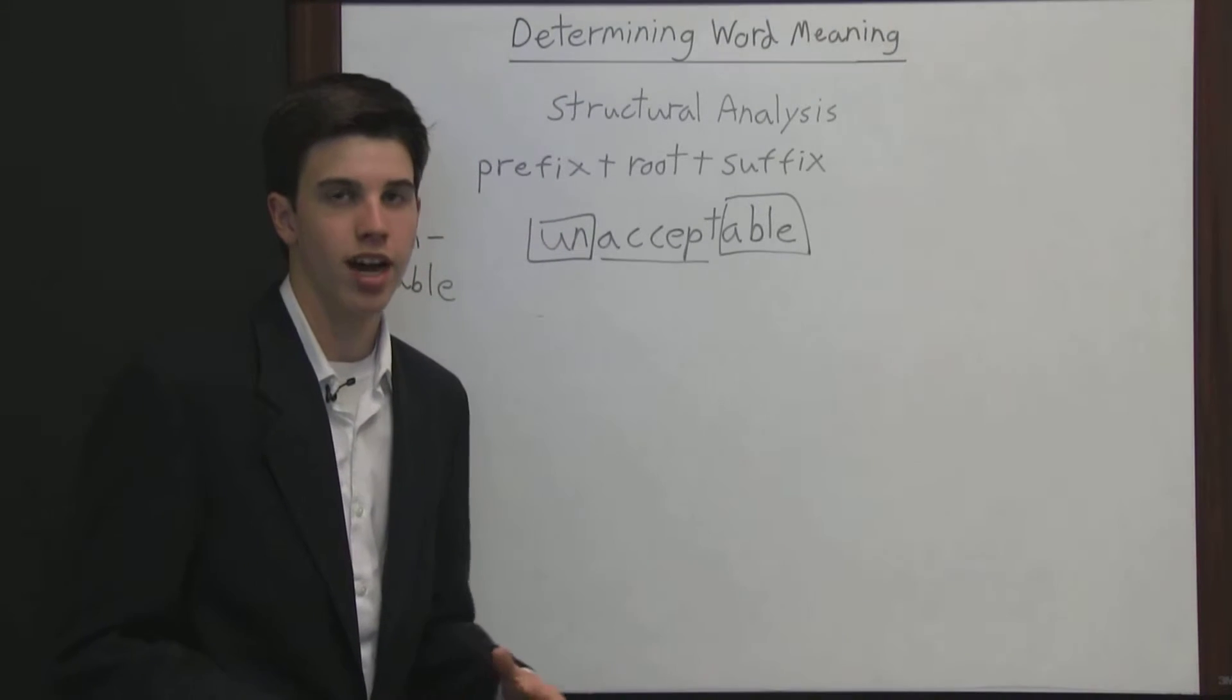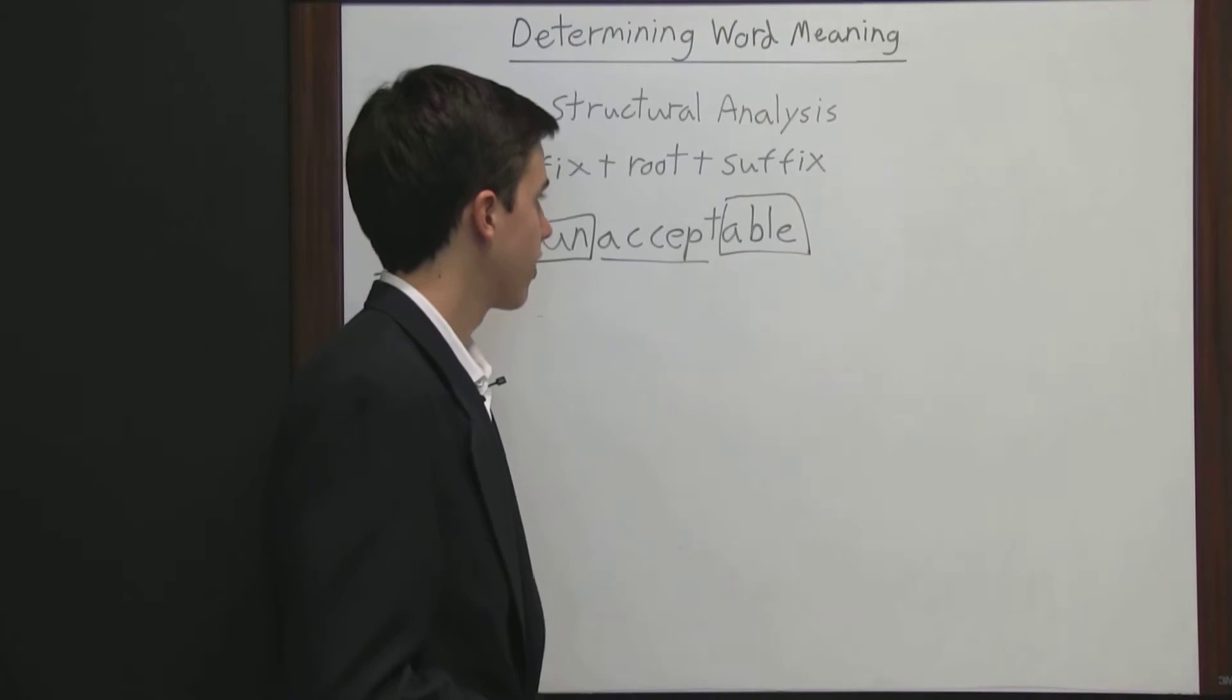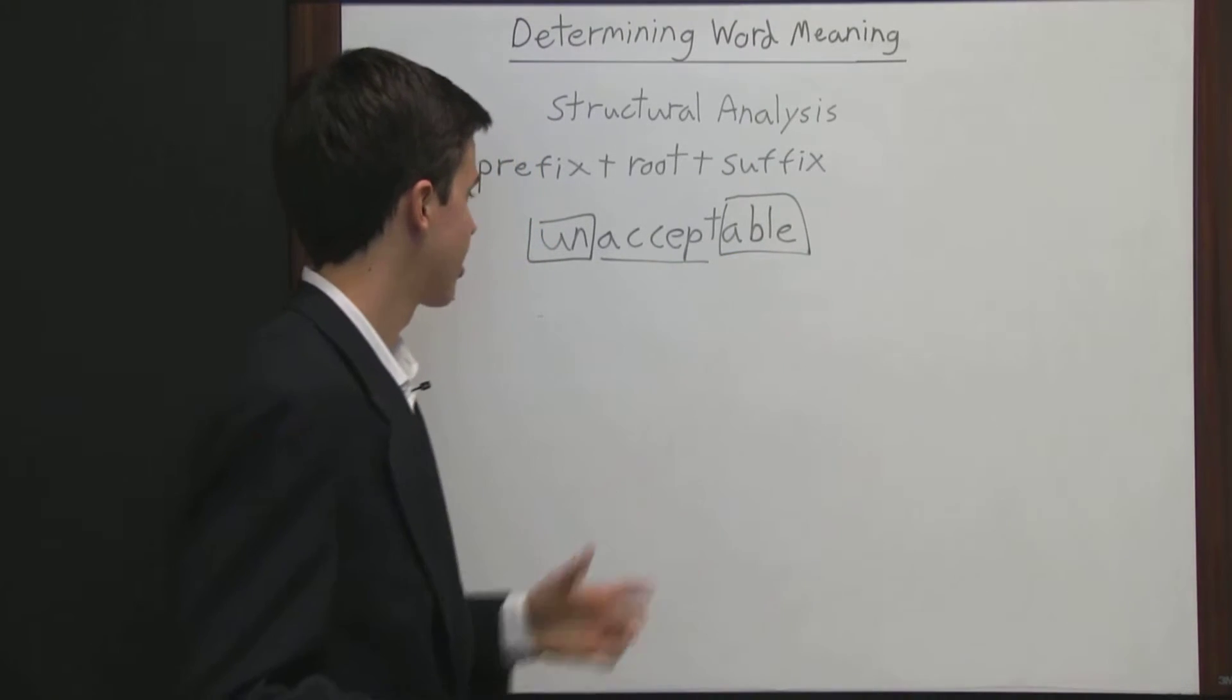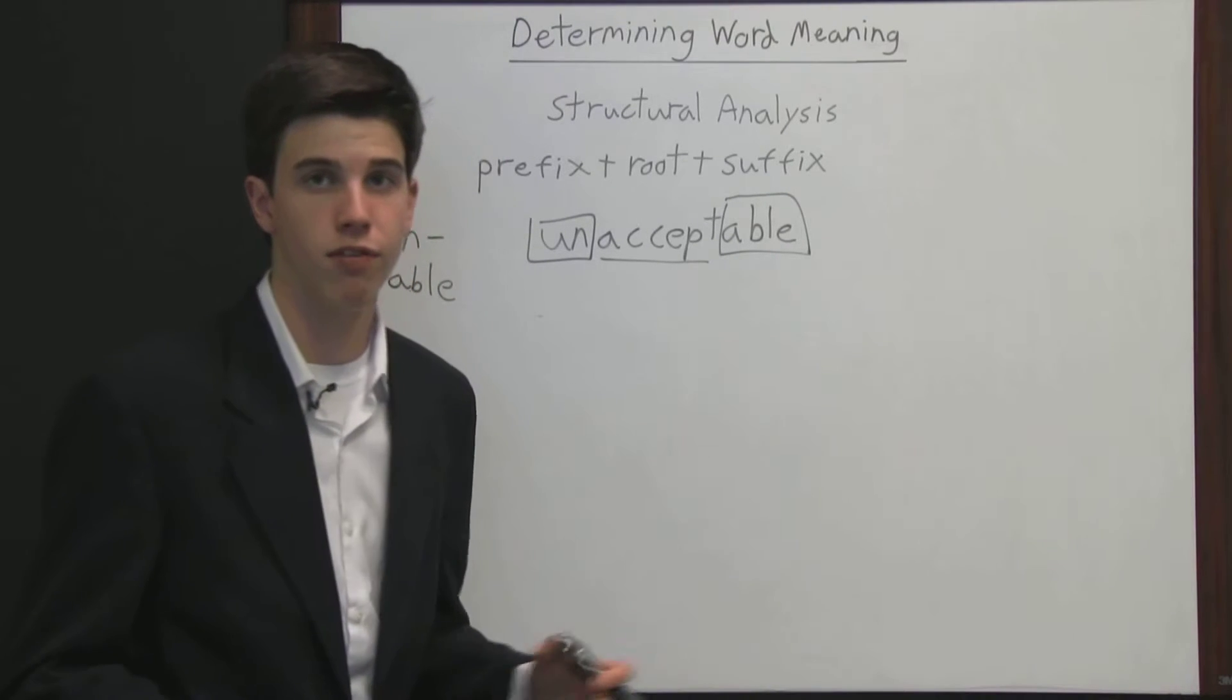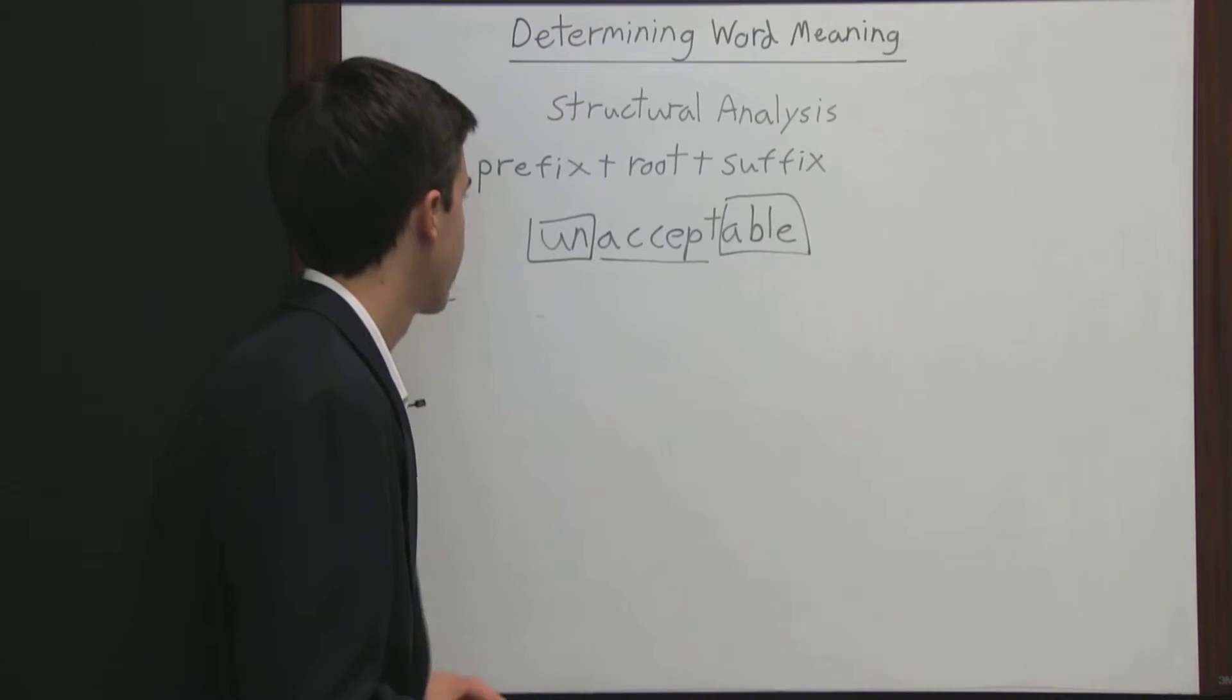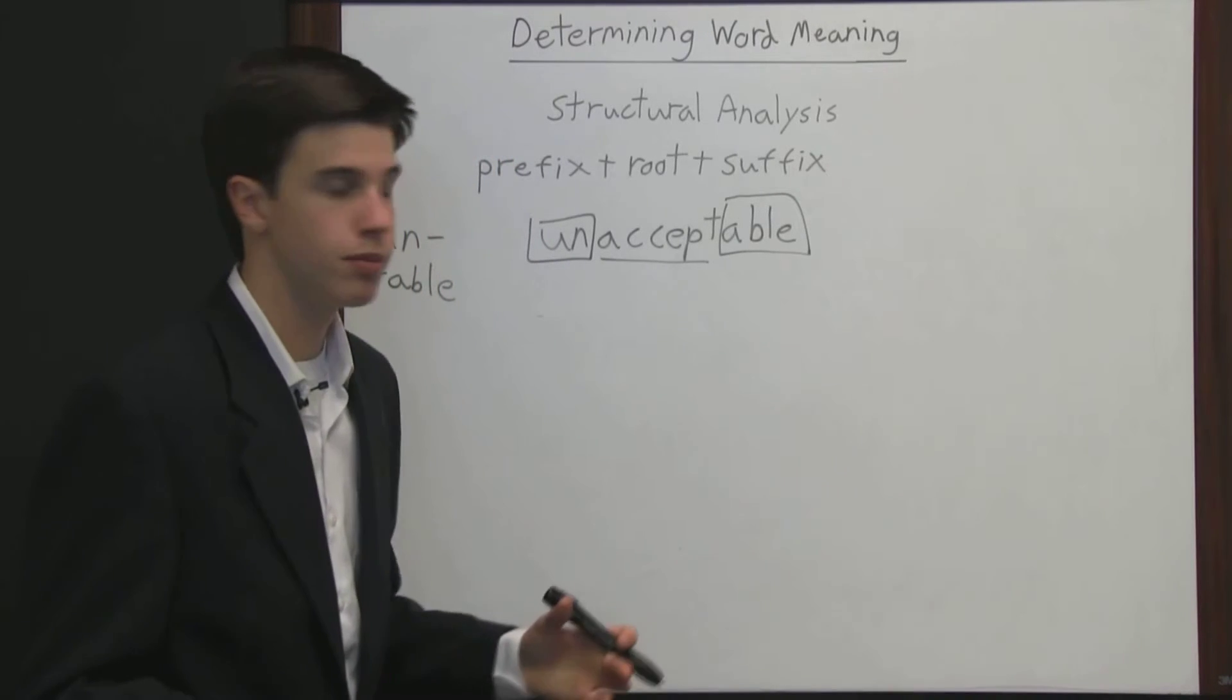So say you didn't understand what unacceptable meant. Well, you could look at able, and you know that means able pretty much. And so you know acceptable must mean able to accept. Well, un, you know, means not, from words like unprofessional, because unprofessional means not professional. It means the opposite of. So you know that un means not acceptable. It's something that's not able to be accepted.